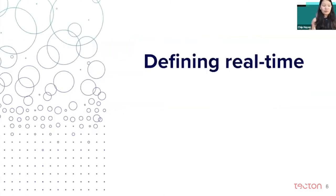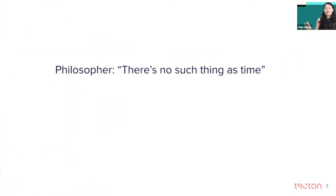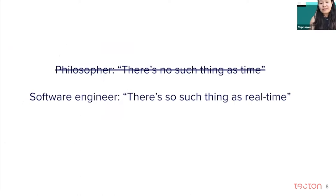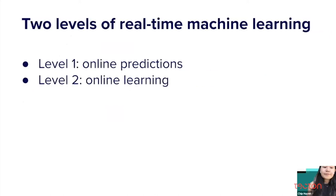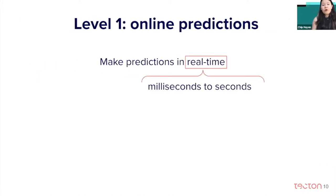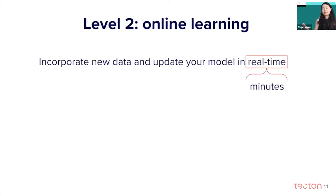Before we go ahead, I just want to go over the definitions of real-time. Real-time is quite an ambiguous term. If you talk to a philosopher or someone in quantum physics, they might say there's no such thing as time. And if you talk to software engineers, they're going to say there's no such thing as real-time — no matter how fast systems are doing things, there's always some delay, whether in milliseconds or even nanoseconds. What real-time means is different for different types of systems. For online predictions, real-time is defined as between milliseconds to about two seconds, whereas for online learning, real-time means on the order of minutes.